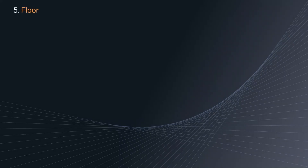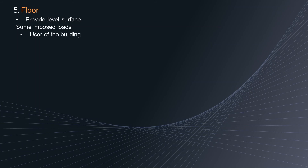Element 5: Floors. Floors are the elements which provide a level surface with adequate strength to resist the imposed load from occupants. Some of the imposed loads on a building include users — mainly humans — furniture, machines installed, and partition walls.